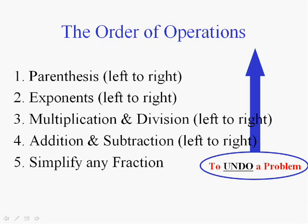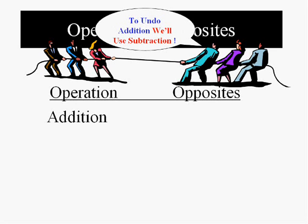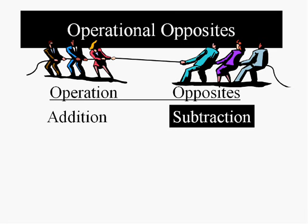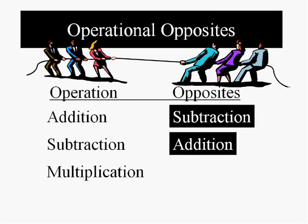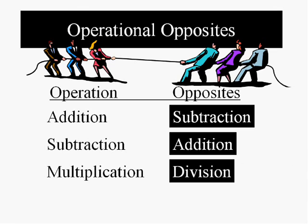Recall that we are trying to get the variable alone. So we're undoing various operations. Remember how to undo operations? The opposite of addition is subtraction. The opposite of subtraction is addition. The opposite of multiplication is division. And the opposite of division is multiplication.